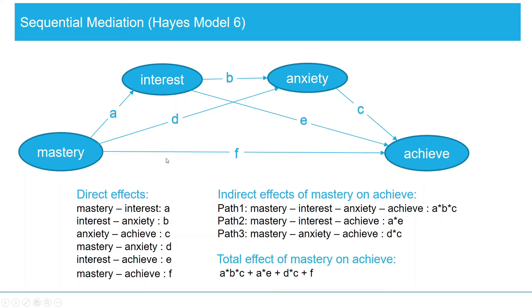Mastery has an indirect effect on achievement through interest, calculated by the multiplication of A and E. The total effect of mastery on achievement can be calculated by the summation of the total indirect effect and the direct effect.